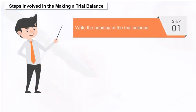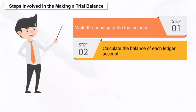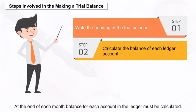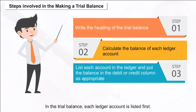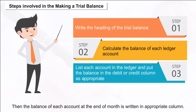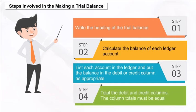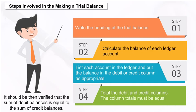Steps involved in making a trial balance: Step 1 — write the heading of the trial balance. Step 2 — calculate the balance of each ledger account at the end of each month. Step 3 — list each account in the ledger and put the balance in the debit or credit column as appropriate; each ledger account is listed first, then the balance is written in the appropriate column. Step 4 — total the debit and credit columns; the column totals must be equal, and it should be verified that the sum of debit balances equals the sum of credit balances.